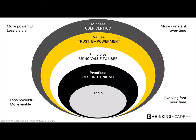The most important element is the mindset of user centricity. If you are user-centric, all the rest comes by itself — you will trust others, empower teams, and your principles will be about bringing value to users. You then develop a method called design thinking and associated tools. The higher you go in this hierarchy, the less visible but the more powerful it is. The difficulty for a company is the cultural transformation — getting people to think about user centricity.